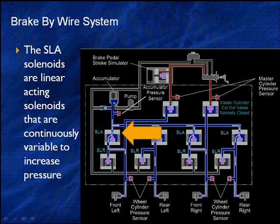So now let's get down and look at our brake by wire valving. We've got the top out of the way. We've got our master cylinder cutout valves normally closed. We've got our pump running. We've got pressure, and we measure the pressure in the accumulator so we know exactly how much it is. The first solenoid we run into is an SLA solenoid. Now these are linear acting solenoids that are continuously variable, and this is a solenoid to increase brake pressure. SLA increases brake pressure. It can vary its position to vary the amount of pressure.